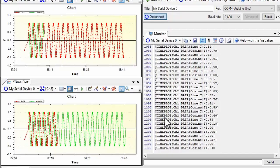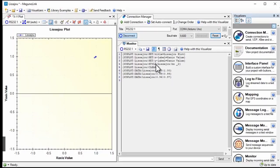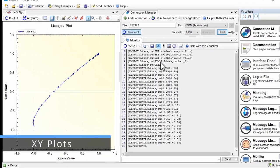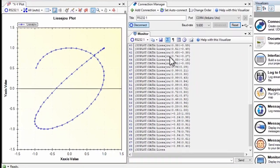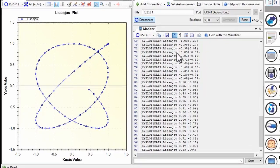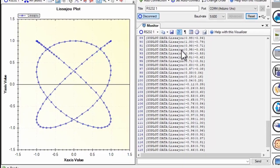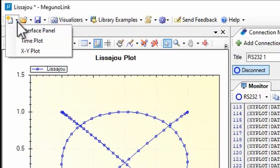So far we've looked at time plots, but MagunoLink also has an XY plot visualizer. It is very similar to the time plot, but instead of MagunoLink automatically using time for the X axis, your Arduino sketch sends both X and Y values for an XY plot. Easily create a new project with an XY plot using the template.